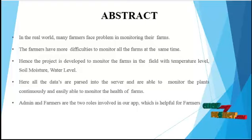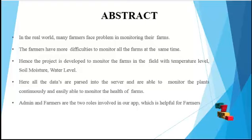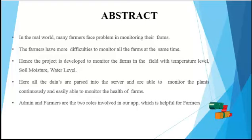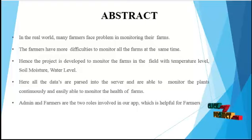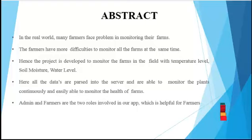Admin and farmers are the two roles involved in our app. This proposed system is oriented to provide smart irrigation and deliver real-time notifications based on information analysis and processing. In terms of monitoring aspects, the presence of water in the farm is monitored. The soil moisture level and temperature are also monitored. The admin can add details of crops regarding production, which will be helpful to the farmers.